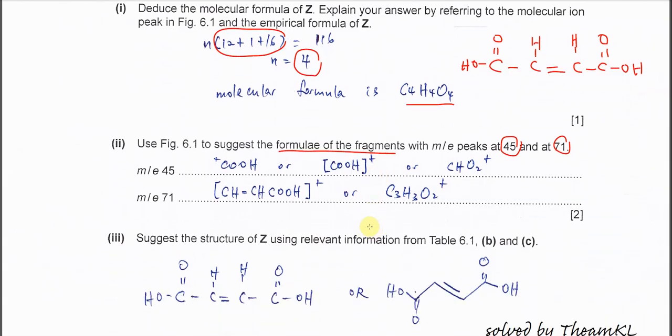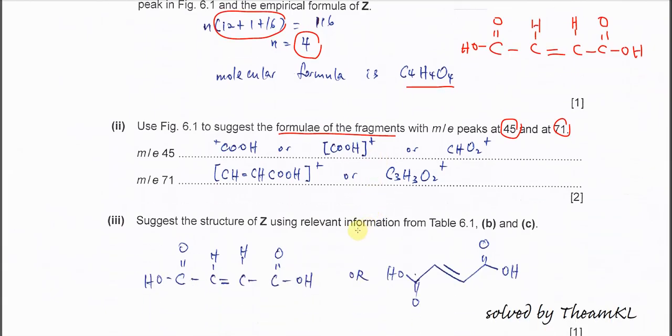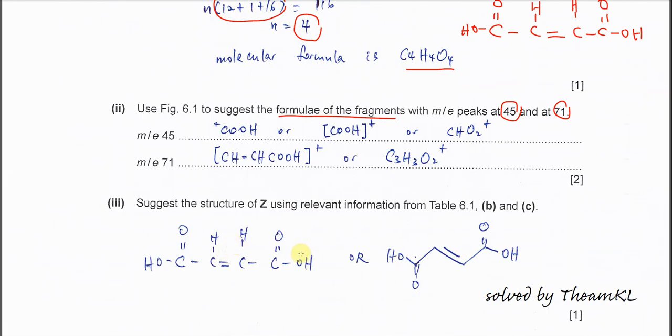How to get m/e 45. This molecule can undergo bond breaking anywhere. Once it undergoes bond breaking it forms radicals and the radicals further ionize to form cations. To get 45 is very easy.